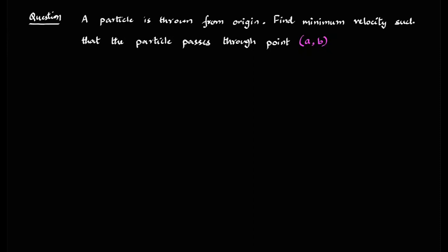So how to solve this? This is a question which is very unstructured, not a very structured problem. But let me say the initial velocity is U and the angle at which it is thrown is theta. These two are unknown quantities.